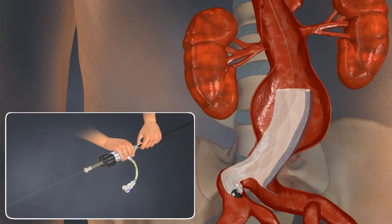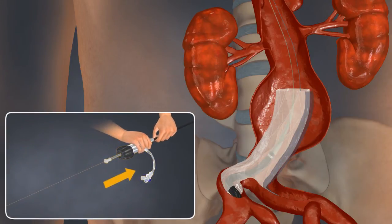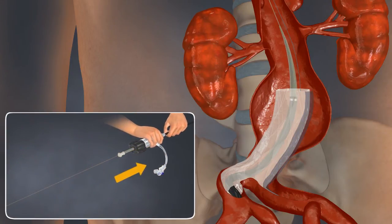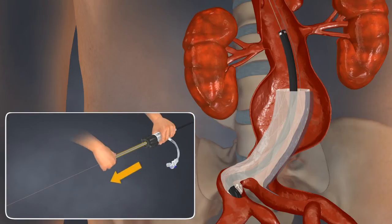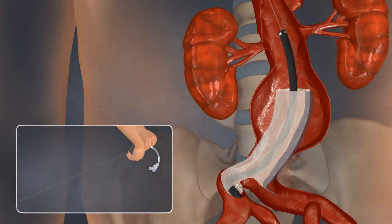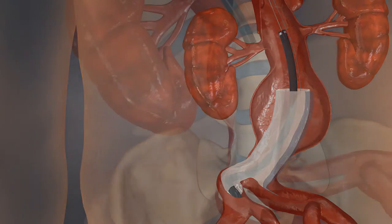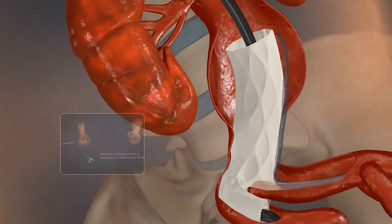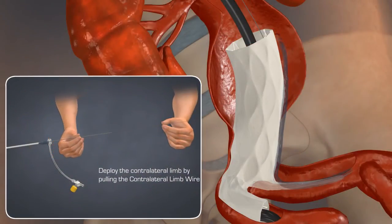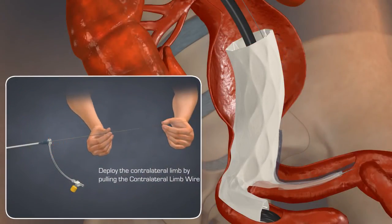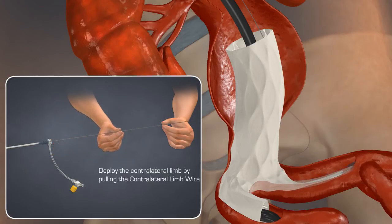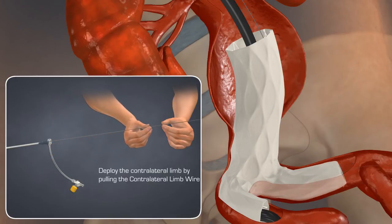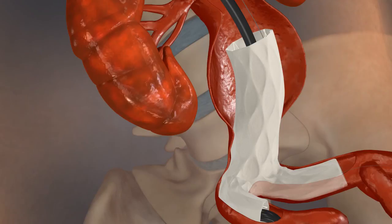Advance the introducer sheath until the radiopaque marker is approximately at the renal arteries. Now remove the dilator and close the hemostasis valve. To finish deployment of the bifurcated stent graft, deploy the contralateral limb by pulling on the contralateral limb wire while maintaining 014 guidewire access.